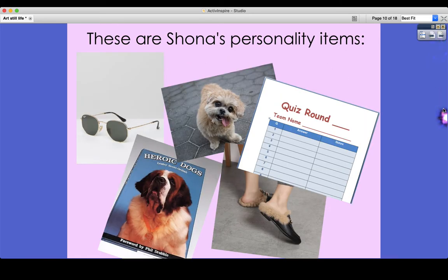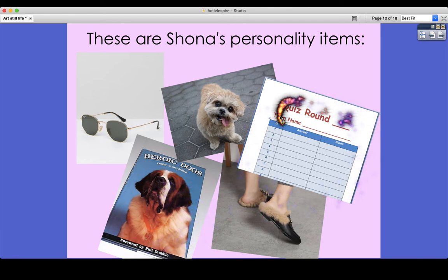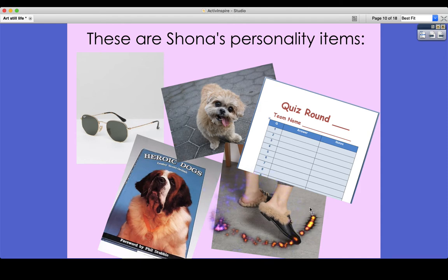I put together a collection of items that represent Shona's personality. We've got sunglasses for her film star persona. She's really into her dogs — you probably wouldn't have a real dog in a still life, but you might have a little model or toy dog. Naturally she'd be reading books about heroic dogs. Quizzes — I know she's super into quizzes and hopefully there'll be one coming our way soon. And then these very fashionable slippers that she likes to wear. Hopefully someone would come in and say, that's definitely a still life composition about Shona.